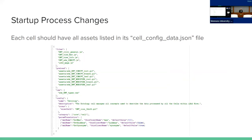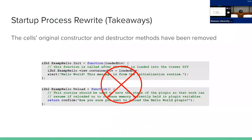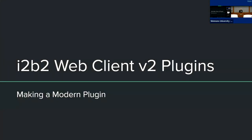Startup process changes: the cell configuration data is still pretty much the same with some file changes. We're going to work on documentation once we get a little more time or demand from the community. If you are looking to do new plugins, reach out and we'll allocate resources to get documentation to you so you can start making plugins sooner. Some of the original function calls for plugins — such as destructors and constructor functions — can now just be handled by document on-load for your main HTML window. They are not going to be scripted like they were in the past.